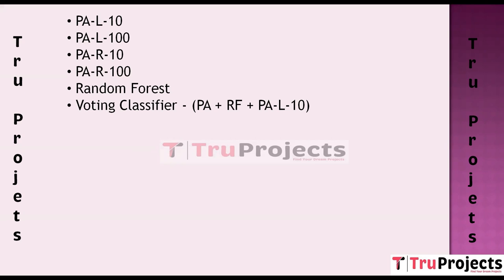PAL100 — Passive Aggressive with Large Margin 100 — similar to PAL10, offers an even larger margin for error tolerance. This makes it more conservative in updating the model, which can be advantageous when dealing with noisy or constantly evolving text data.